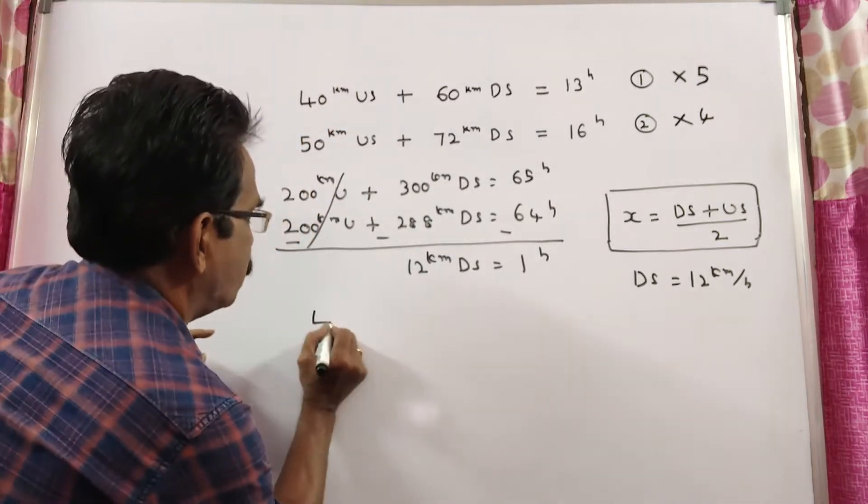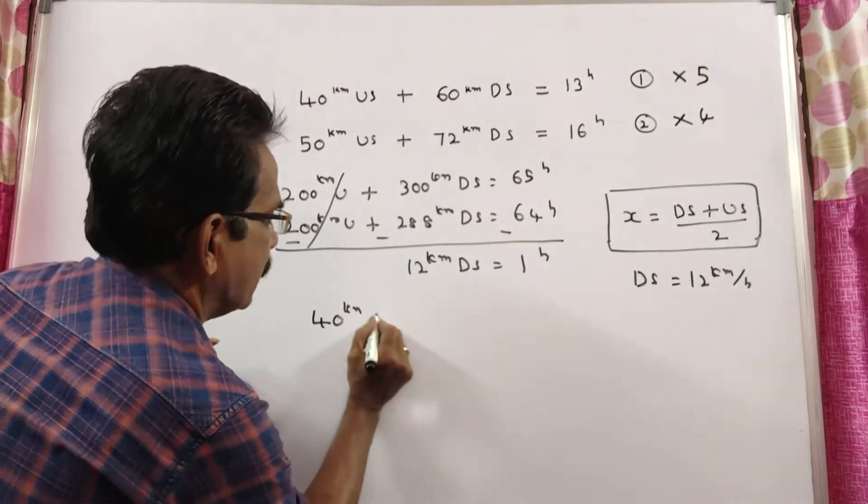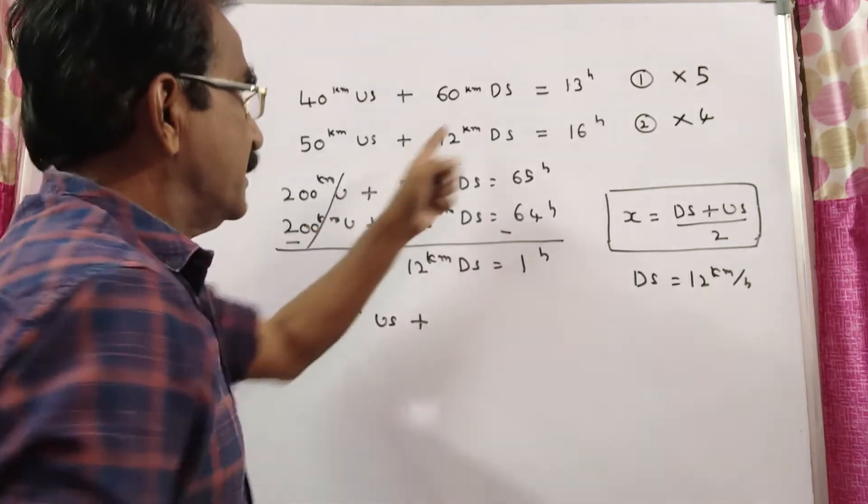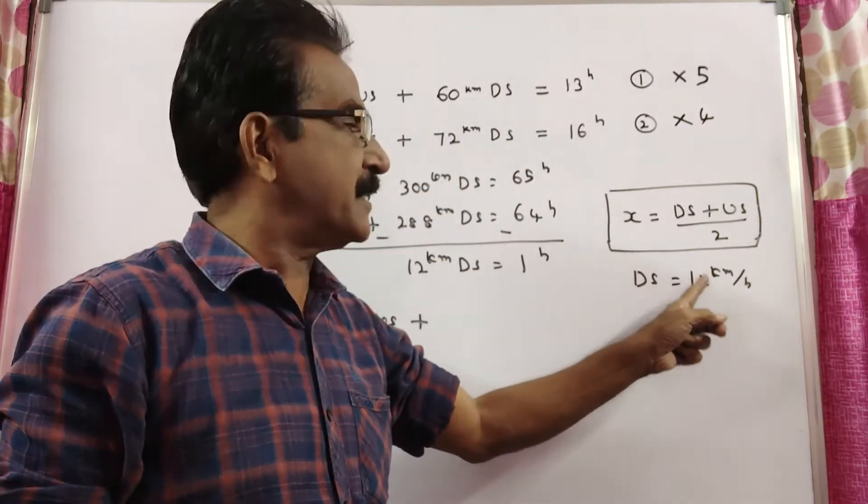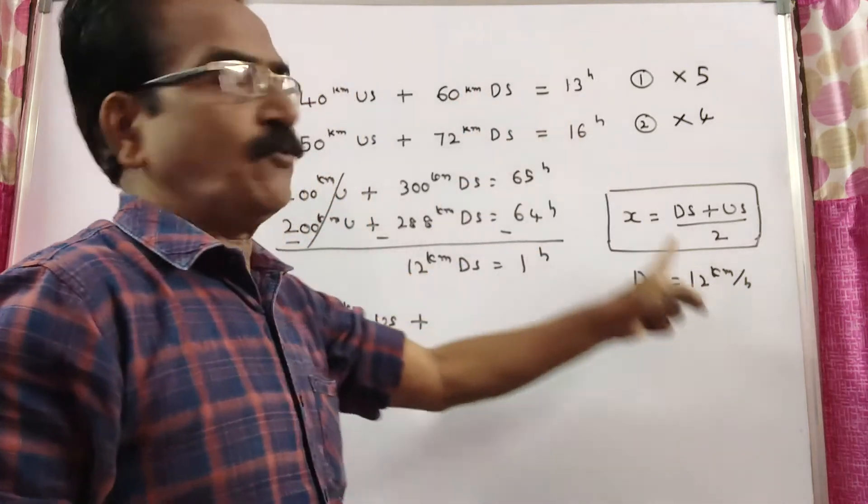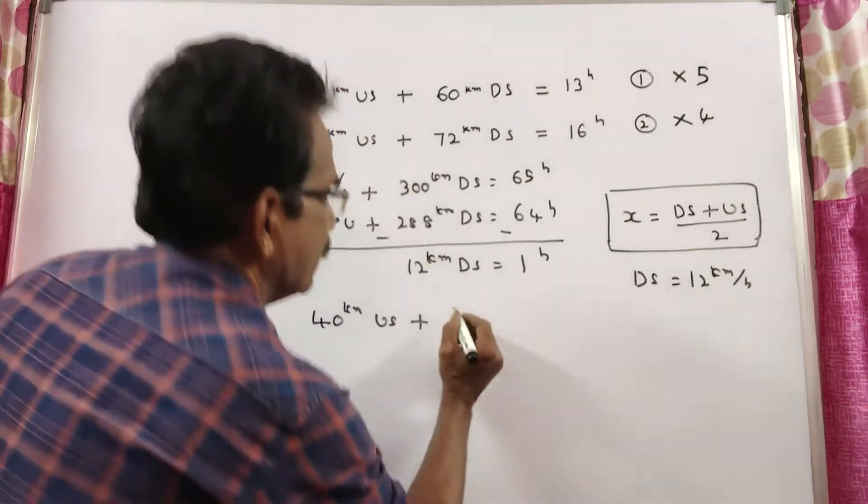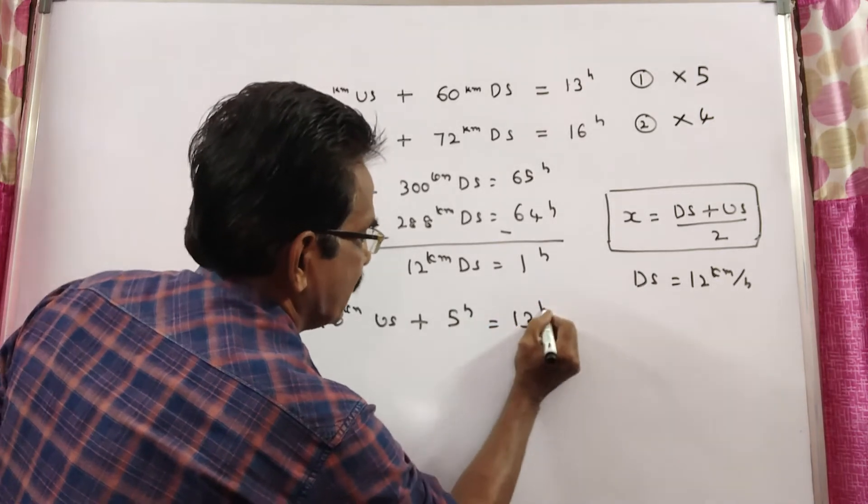Let us substitute this DS value in equation 1. 40 km upstream plus 60 km downstream can be travelled in 13 hours. Speed in downstream is 12, 60 by 12 takes 5 hours. Plus 5 hours is equal to 13 hours.